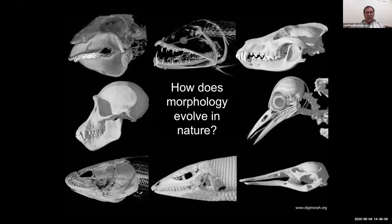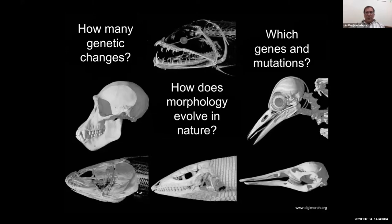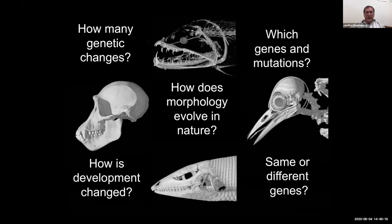We want to understand when a new trait evolves: what is the genetic basis, how many loci are responsible, what particular types of genes and mutations might be preferred in nature, how those mutations affect development — both embryonic and post-embryonic — and whether, if the same phenotype evolves multiple times, the genetic basis is predictable. To answer these questions, we're using a vertebrate model system.